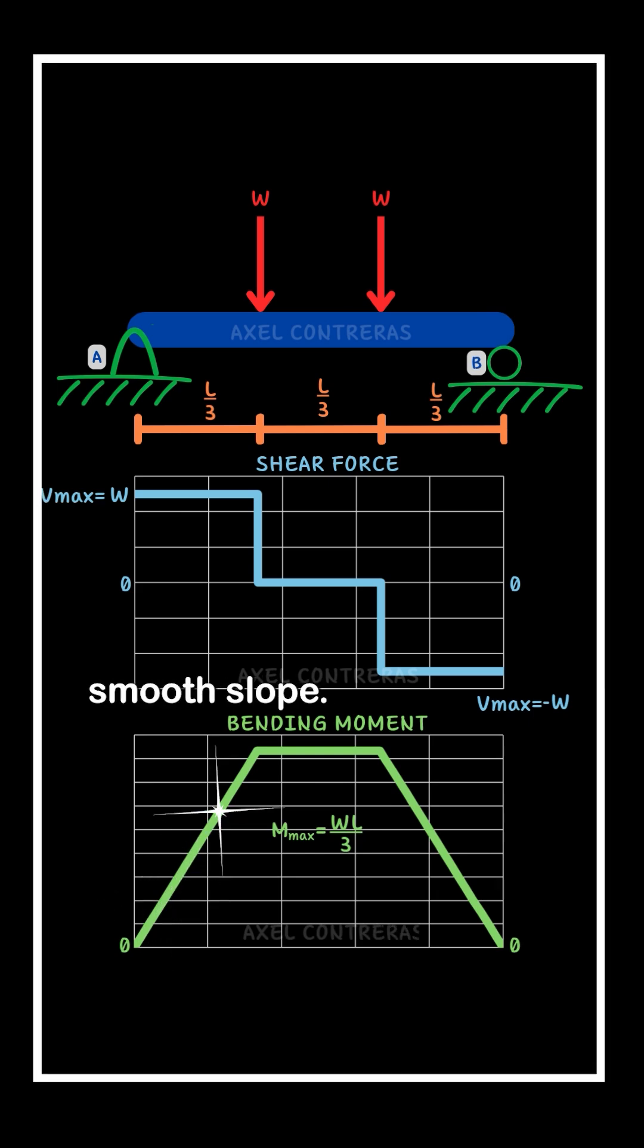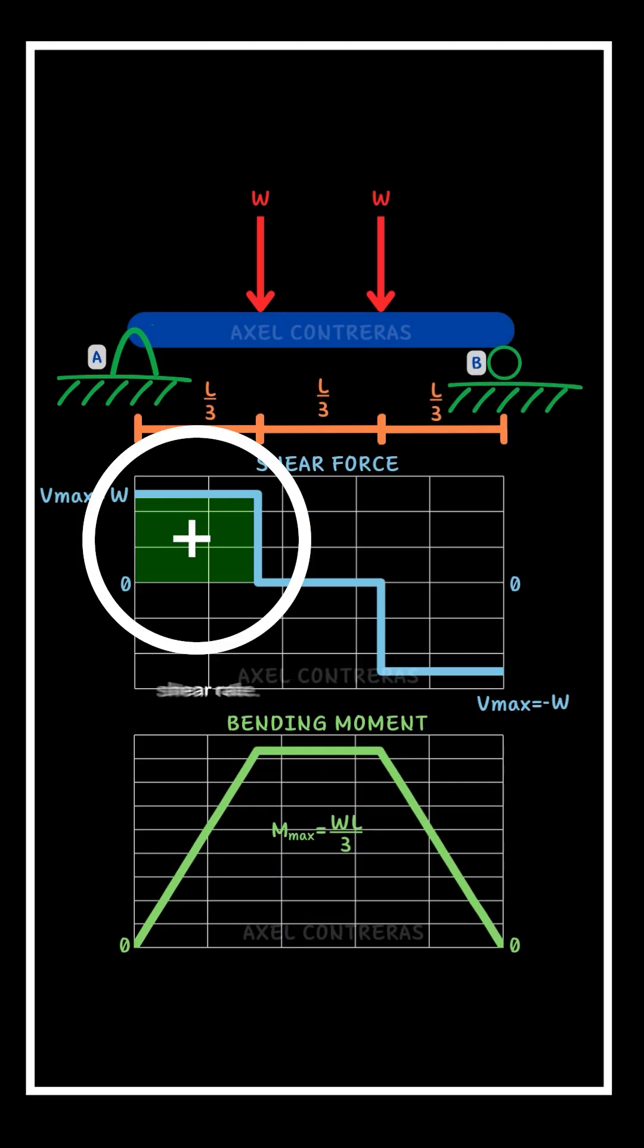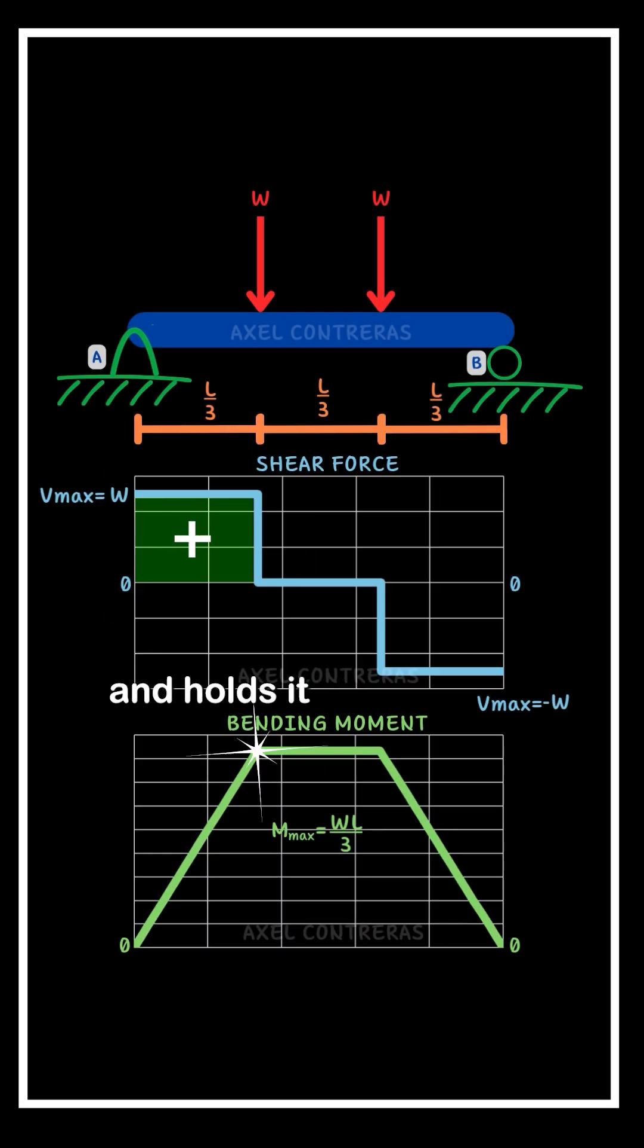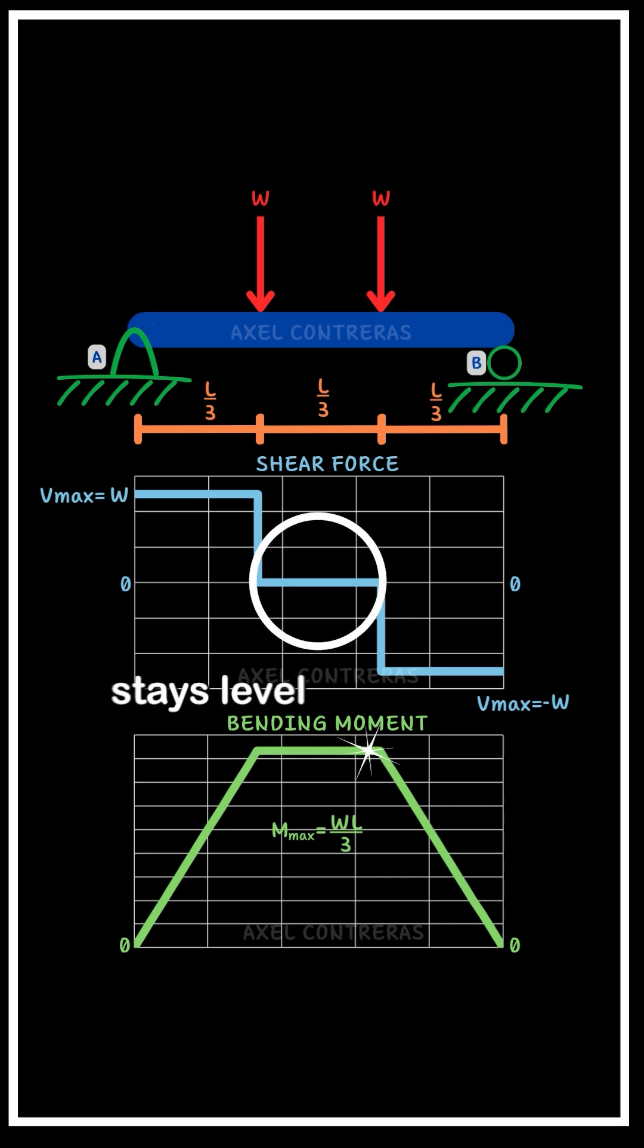It starts at zero and rises with a smooth slope, following the positive shear rate. It reaches a peak and holds, it no longer increases. The slope is zero, so the moment stays level.